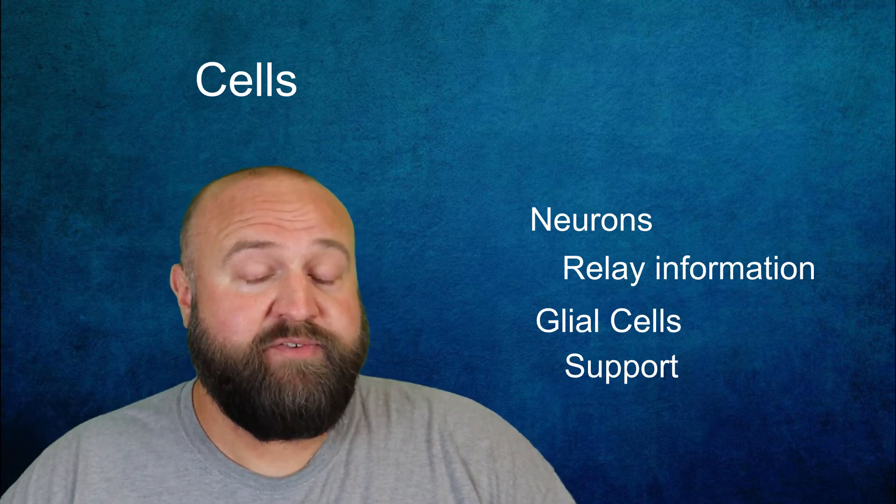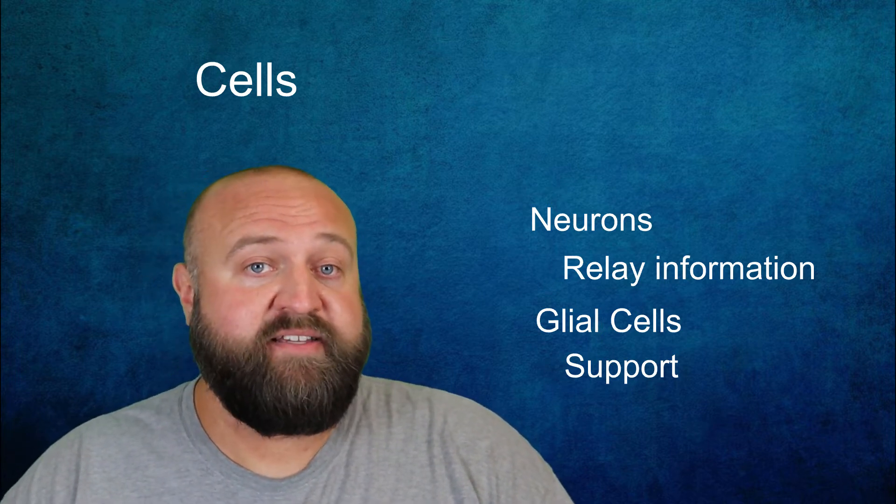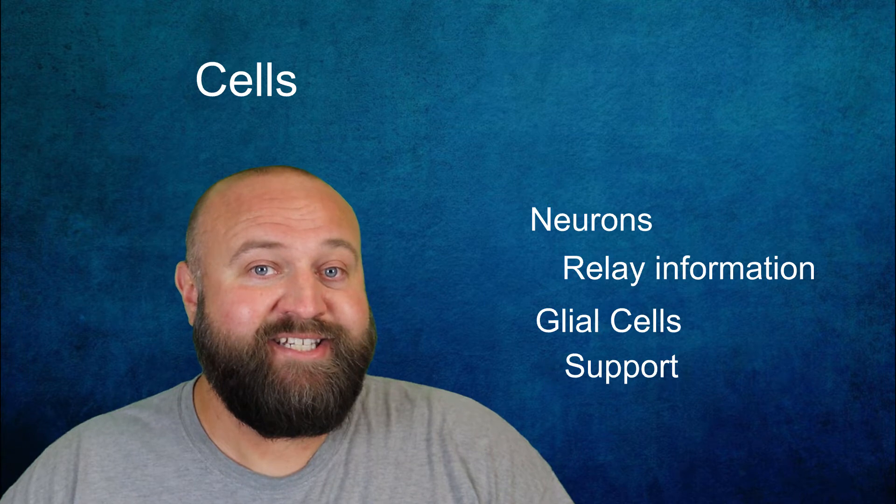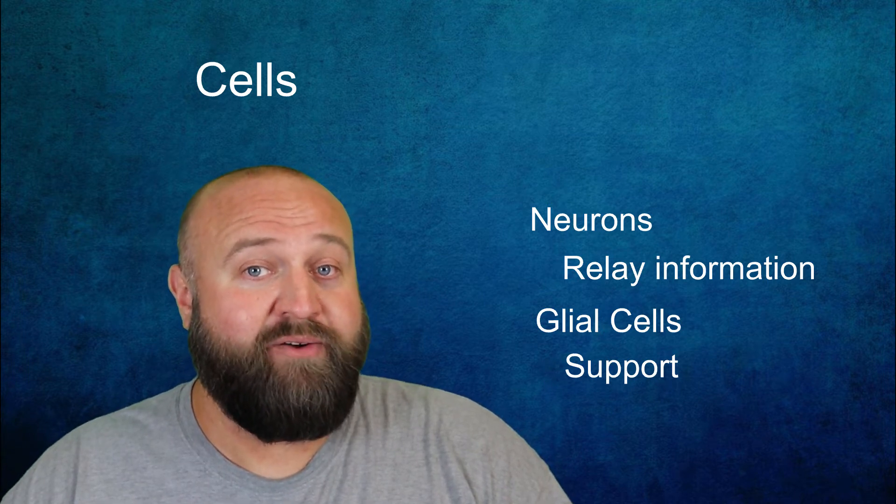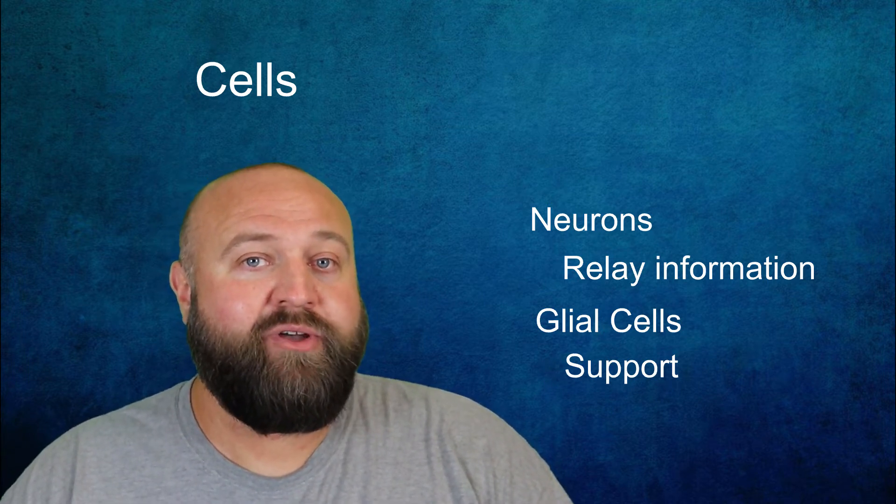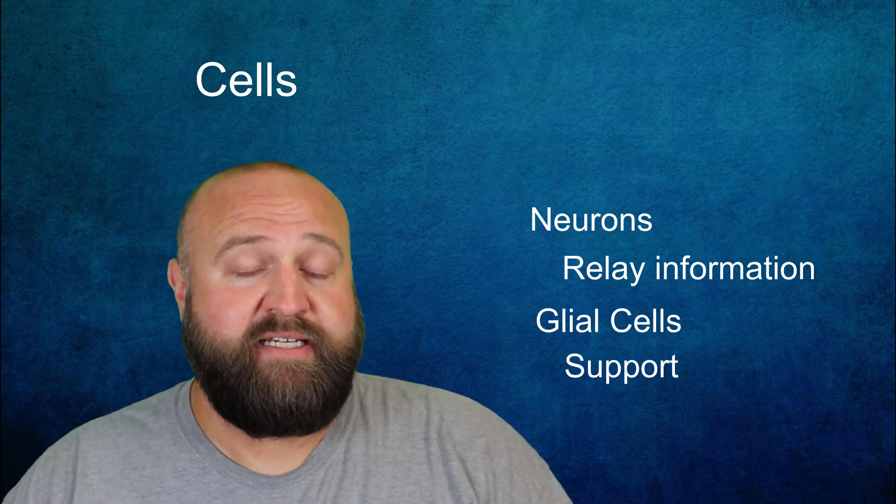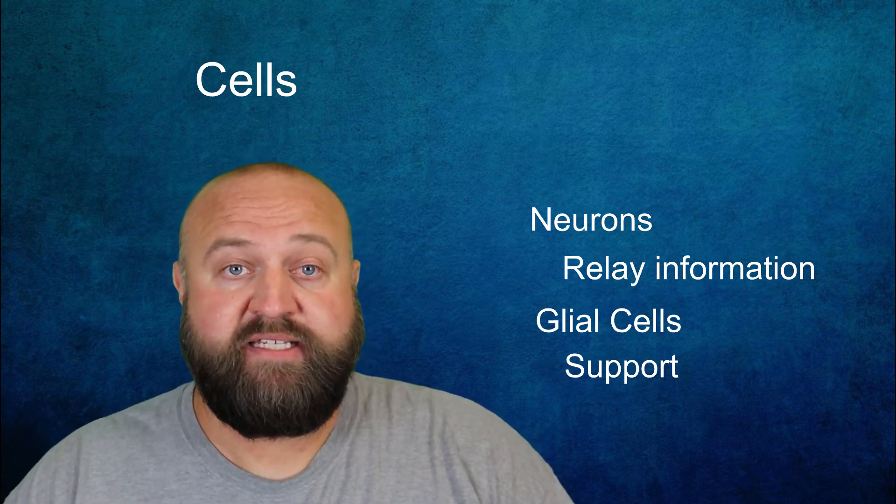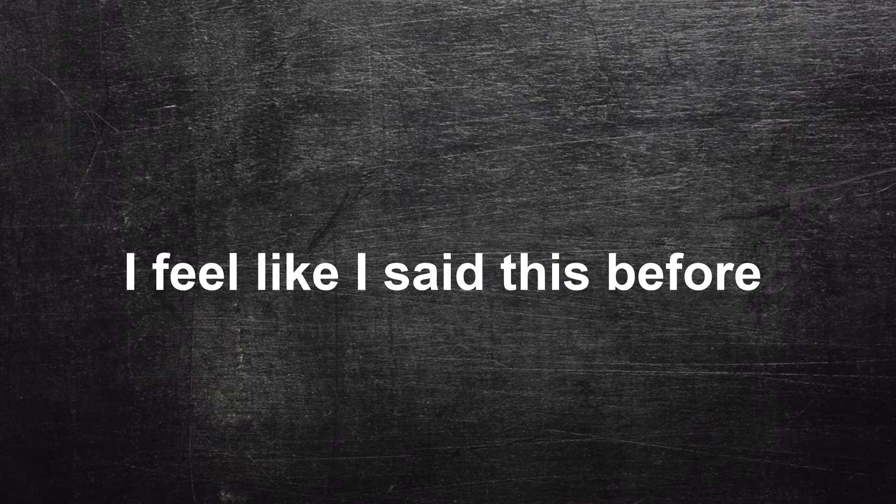Now there are many different types of both glial cells and neurons. However, since this is just a general overview video meant for a general psychology course, I'm not going to go into detail as far as the different types of cells that do exist. I do go into greater detail about the components of the neurons in another video that you can check out in the link below.